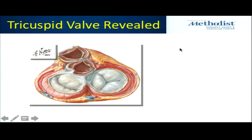A little bit about imaging. In the echo world, we've been a little lazy for decades around the tricuspid. We sort of know there are three leaflets, we look at the leak, but because we didn't have interventions, we didn't spend a lot of time trying to differentiate the mechanism of the leak. That's changed recently.